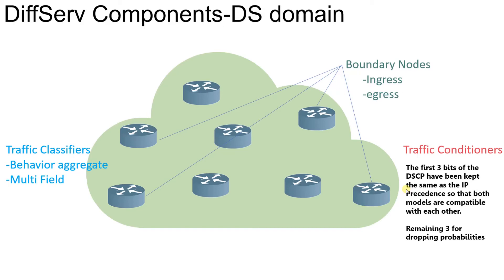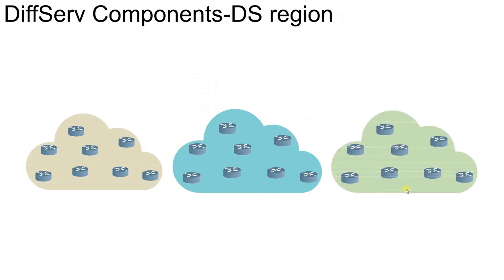Regarding traffic conditioners: the first three bits of the DSCP field are kept the same as IP Precedence, since IP Precedence also takes three bits from the Type of Service field. The remaining three bits in DSCP notify about dropping probabilities. This allows differentiation within the same queue — for example, during congestion, which packets can be dropped is determined by the dropping probability carried in those remaining three bits. Therefore, DSCP is compatible with IP Precedence.